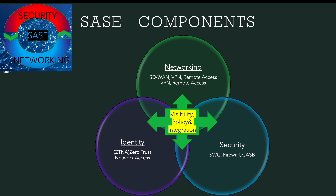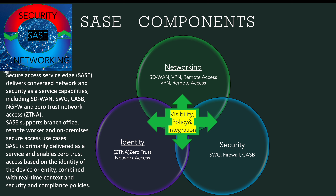Let's look at the detail of the SASE components. SASE is a combination of networking, security, and identity. On the networking side, we have SD-WAN (software-defined WAN), VPN, and remote access VPN. On the security side, we have Secure Web Gateway (SWG), firewall, and CASB — which stands for Cloud Access Service Broker. On the identity side, we have ZTNA, which stands for Zero Trust Network Access. All three pillars of this architecture need to work together in an integrated fashion with common policy and visibility across all components.